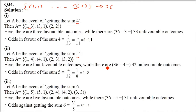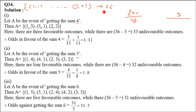Now 3 by 33 — how does this come? 3 is the favorable cases in the numerator. When we try to find the odds in favor, we take favorable cases divided by unfavorable cases. Favorable cases are 3. Total cases are 36, so unfavorable cases are 36 minus 3 = 33. So 3 by 33, which is 1 by 11. This is the odds in favor.